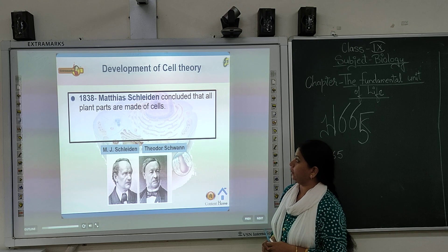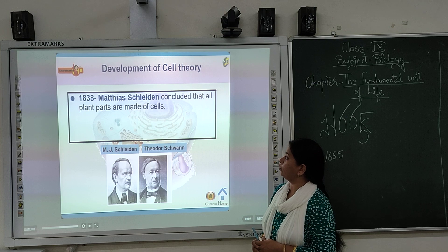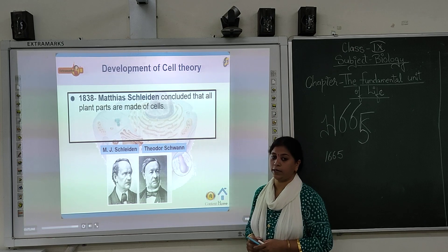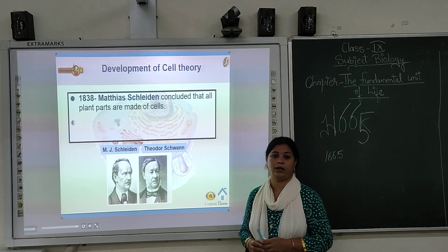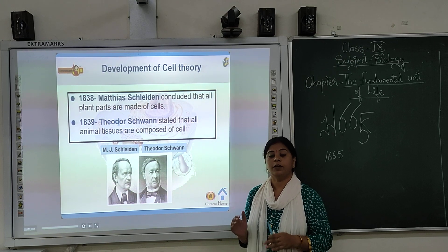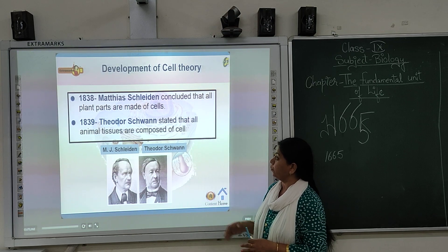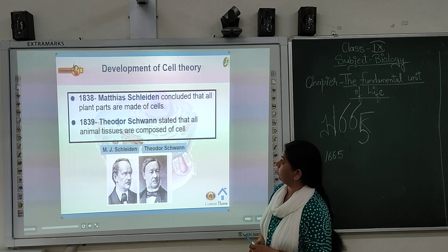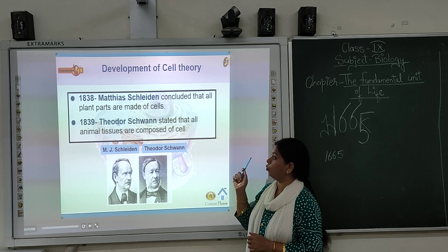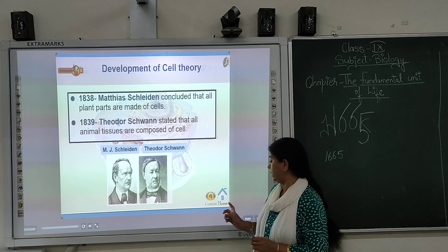Now the development of cell theory. In 1838, there were two scientists: Matthias Schleiden, who was studying plant parts, and Theodor Schwann, who was studying animal tissues. Both of them gave the concept of cell theory — that all organisms are composed of one or more cells.